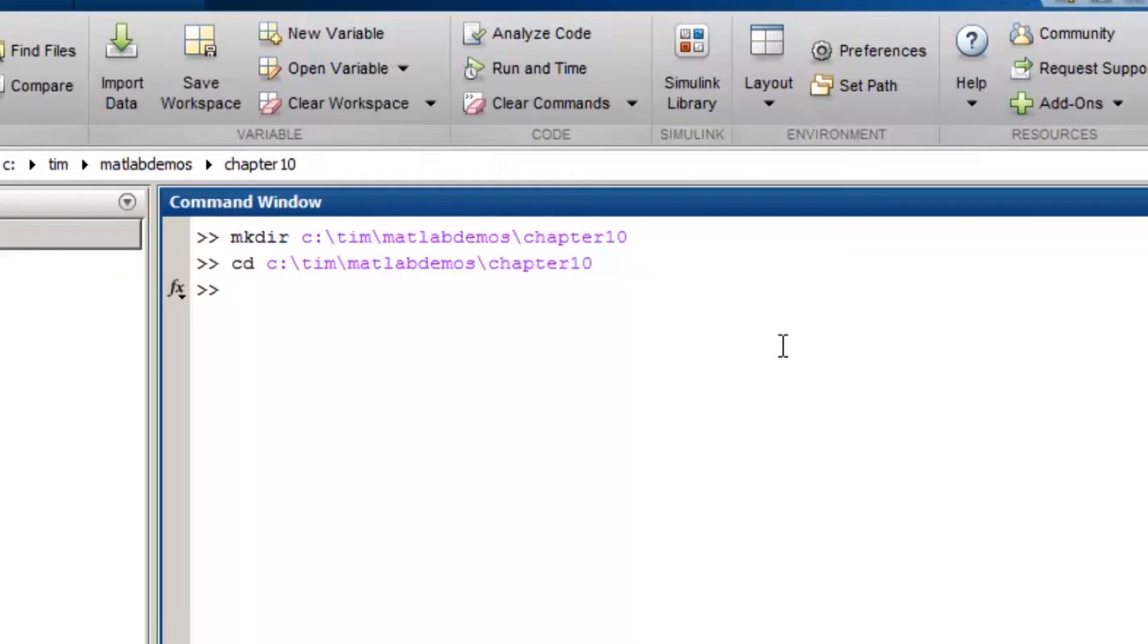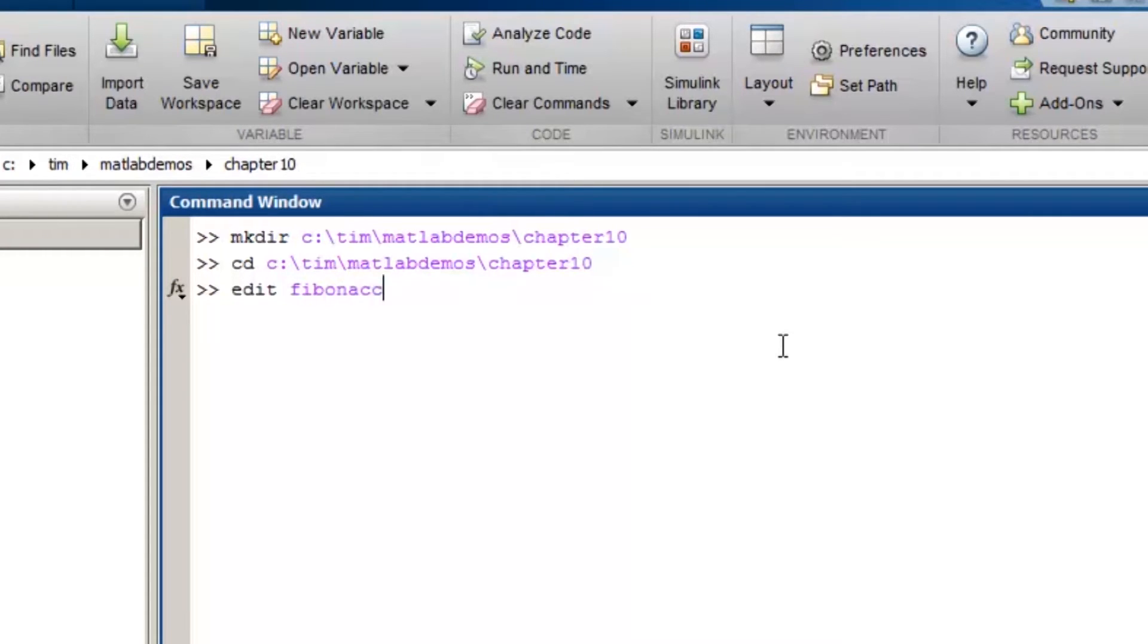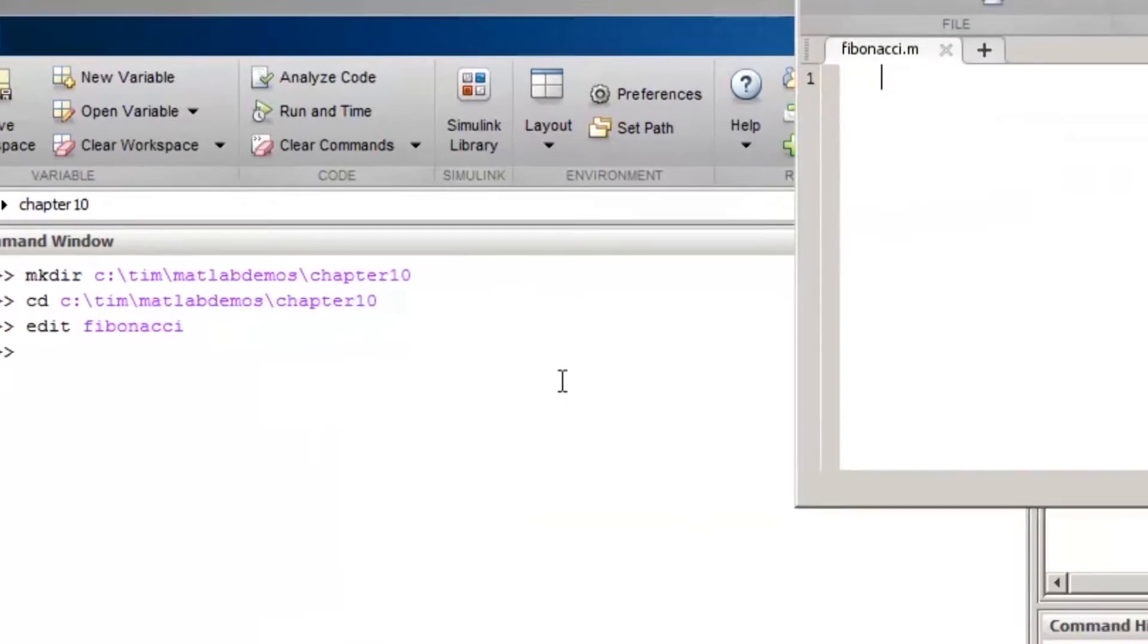Now I'll create a script file named Fibonacci in that directory. I'll set the desired number of terms in my series to 5. So n equals 5. Before I start the loop, the first two values in the sequence have to be set. So f of 1 equals 0 and f of 2 equals 1.